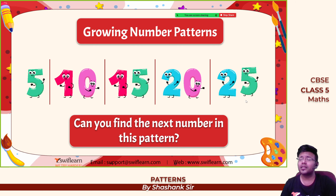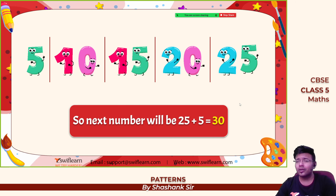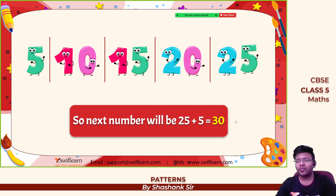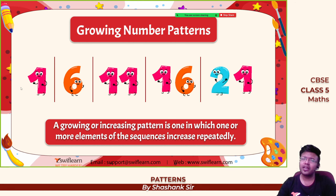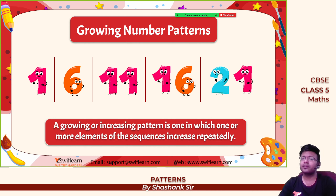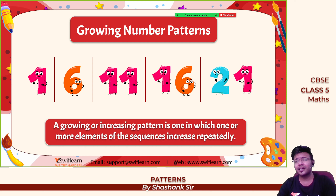The next number is 30. We are taking multiples of 5, or in other words, adding 5 each time — this is the 5 times table. Similarly: 1, 6, 11, 16, 21 — we are adding 5 each time. 1 plus 5 is 6, 6 plus 5 is 11, 11 plus 5 is 16, 16 plus 5 is 21, so 21 plus 5 is 26.